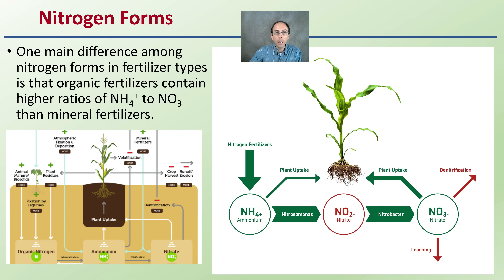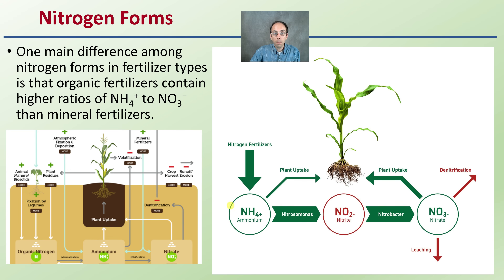Regarding nitrogen forms: one key difference is that organic fertilizers contain higher ratios of ammonium and nitrate than mineral fertilizers. The type of nitrogen plays a role — ammonium and nitrate versus nitrite differ significantly in how they can be absorbed by the plant and the odds of them leaching or denitrifying. So organic fertilization delivers higher rates of ammonium and NO3 concentrations.